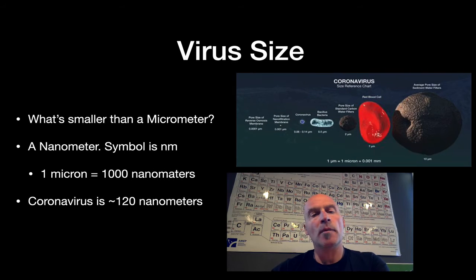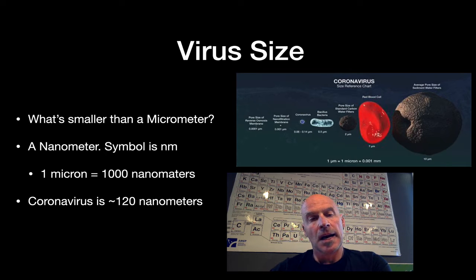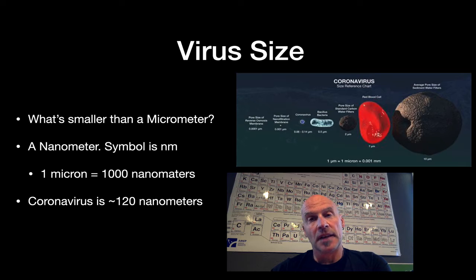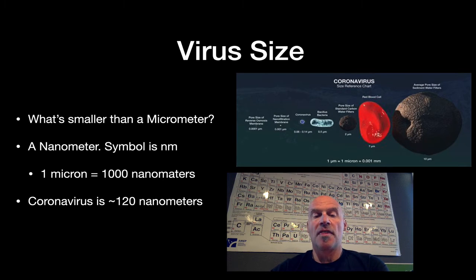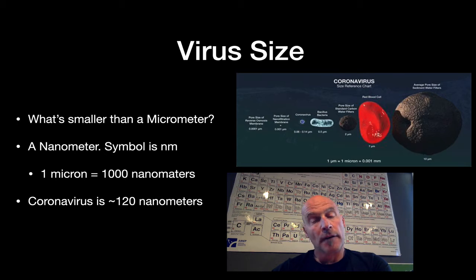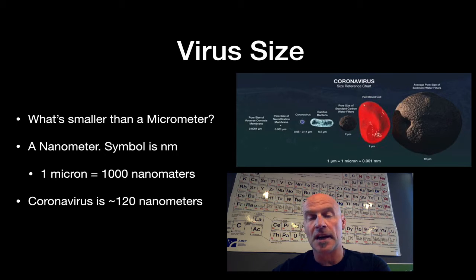What's smaller than a micrometer? A nanometer, with the symbol Nm. One micron equals 1,000 nanometers. For reference, the coronavirus is approximately 120 nanometers.